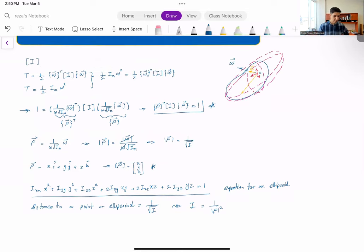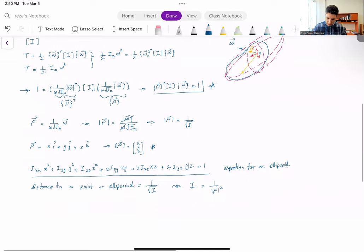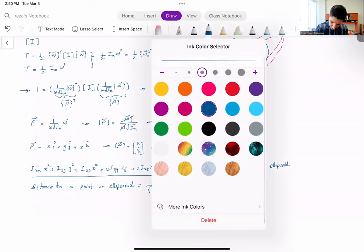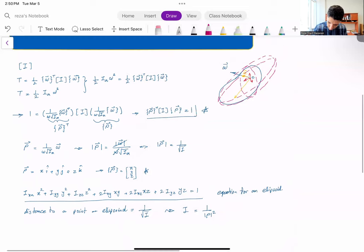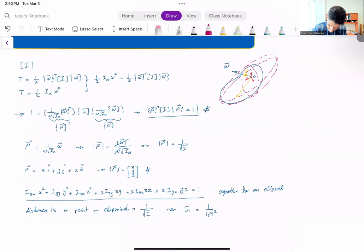So a few things. Let me give it a name. This ellipsoid that I have defined, this is called ellipsoid of inertia.